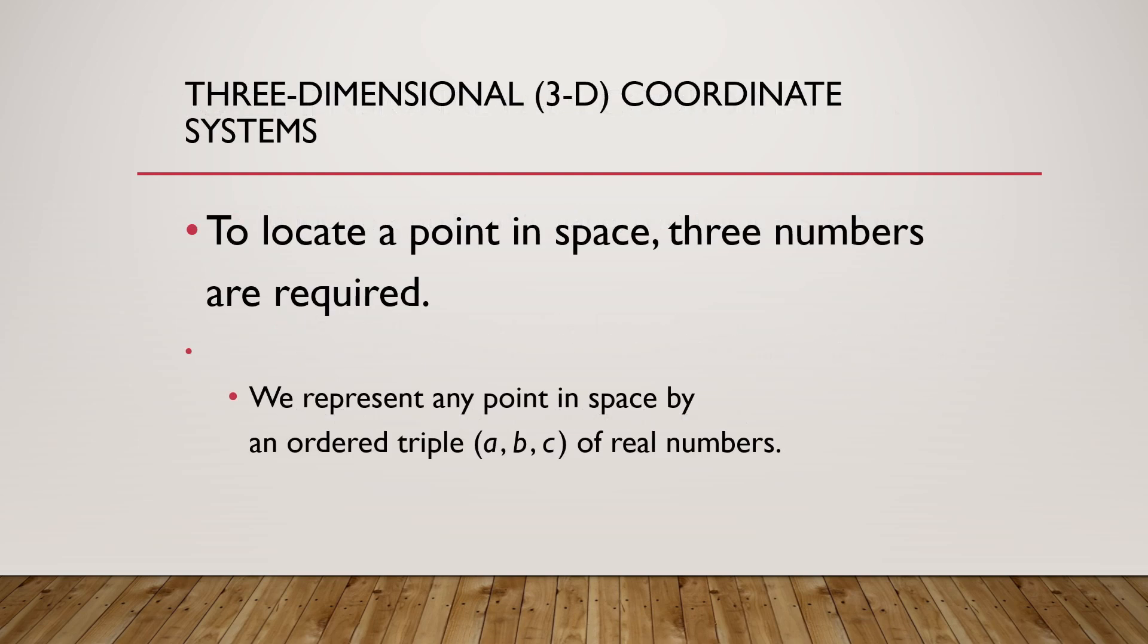If we want to locate a point P in a real space, that is three dimensional coordinate system, we have to have a triple ordered pair, that is A, B, C.